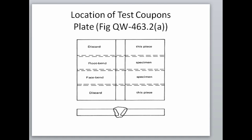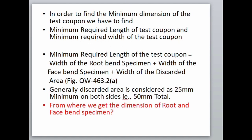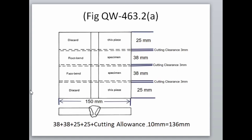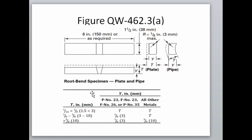So how can we calculate the minimum dimension of the test coupon? We have to calculate two dimensions: the minimum length and the minimum width. The minimum required length is the sum of the width of bend specimens — face and root bend or side bends — and the width of the discarded area, taken as 25 mm minimum on both sides. To get the details of the face and root bend specimen, we go to figure QW462.3A. From the figure, the width of the bend specimen is 38 mm and the length is 6 inches or 150 mm as required, with a 3 mm chamfer on edges to prevent premature corner cracking.